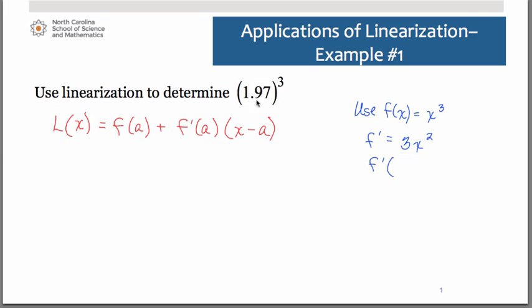We will need to evaluate that at a particular x value. Now we want to do 1.97 cubed. And if you think back to the whole idea behind linearization, it's the idea that we're using a value close to the targeted x. So since we're targeting 1.97 and we want something close to that that will be easy to cube, let's make our a value be 2. We need then to do f prime of 2 and that gives us 12. Another thing we're going to need is the actual function value at 2. That simply is going to be 8, 2 cubed.